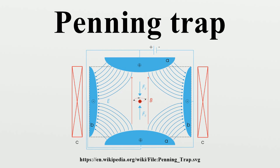This kind of trap is particularly well suited to precision measurements of properties of ions and stable subatomic particles. Geonium atoms have been created and studied this way to measure the electron magnetic moment. Recently these traps have been used in the physical realization of quantum computation and quantum information processing by trapped qubits.